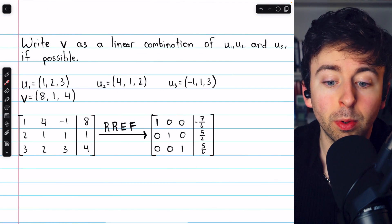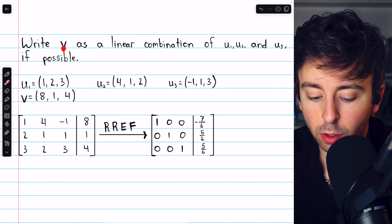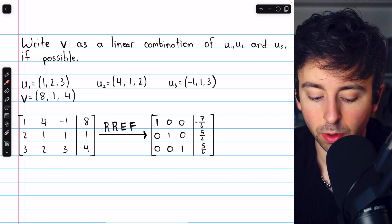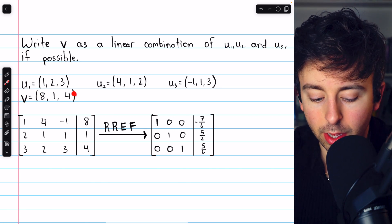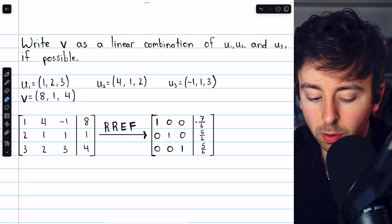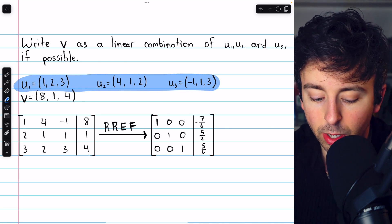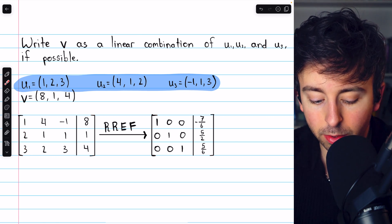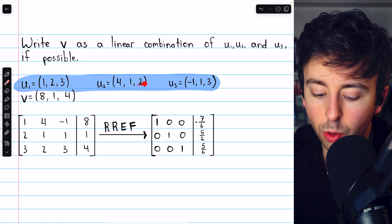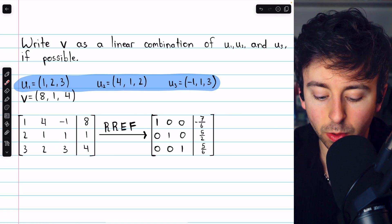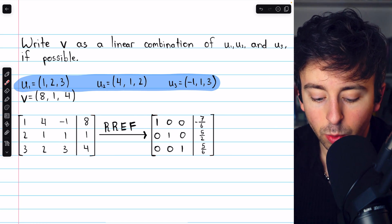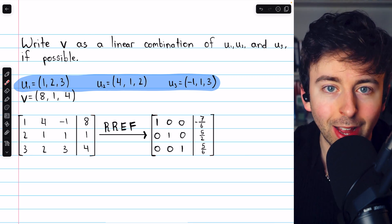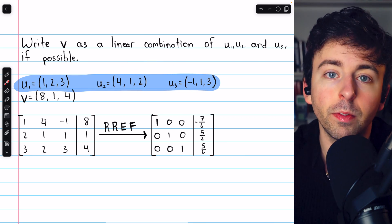So now we can do this example very quickly. Suppose we're trying to write the vector v as a linear combination of the three vectors u1, u2, and u3. Here's the vector v, and we're trying to write it as a linear combination of these three vectors. What do we do? Well, we construct an augmented matrix. The columns are the components of u1, u2, and u3, augmented with the components of the vector v, which is what we're trying to express as a linear combination of the other three vectors.